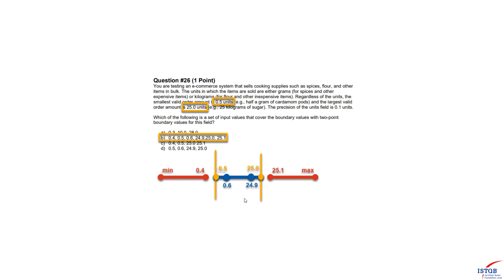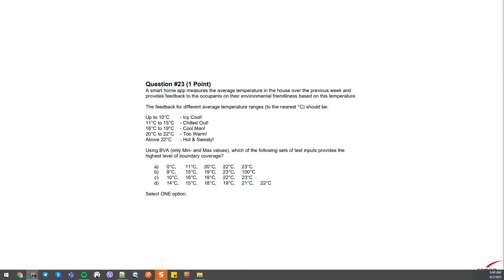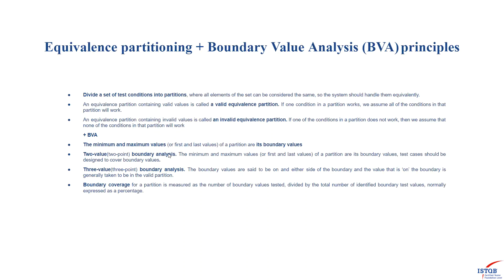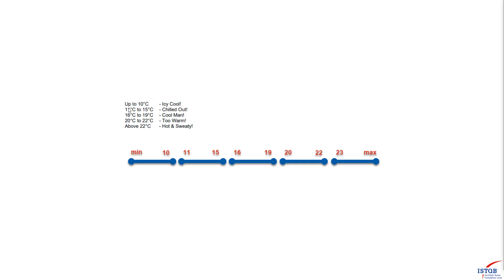Let's move to the second question. When asked about equivalence partitioning or boundary value analysis, we always start by dividing a set of test conditions into partitions. The description is very detailed. 'Up to 10' means 10 is included in the partition; '11 to 15' means both values are included in the second partition, and so on. We can define five partitions in total.